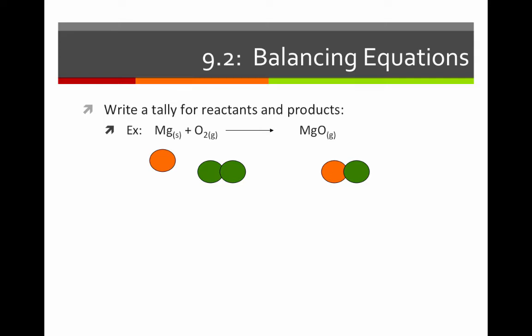Notice here that we have more oxygens on the left than we do on the right. This is an unbalanced equation. It implies that we have destroyed an oxygen, but this isn't the case, so we need to balance the equation.